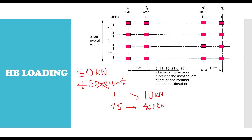If you want to apply this on software in 3D form, that means per wheel is going to be 450 divided by 4, because each axle has 4 wheels. So that gives you 112.5 kN per wheel. You apply 112.5 kN on each of the wheels across all four axles — the same load applies to every wheel on all axles.